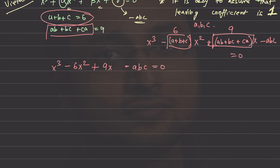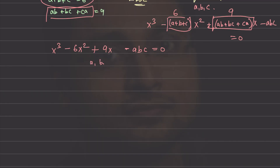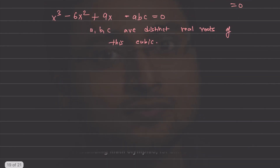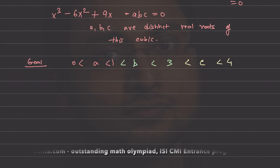a, b, c are distinct roots because a < b < c is given. So a, b, c are distinct real roots of this cubic. Our goal is to approximately find the position of the roots — specifically, show that a is between 0 and 1, b is between 1 and 3, and c is between 3 and 4.